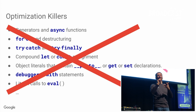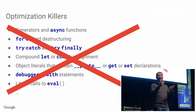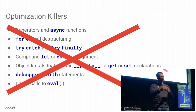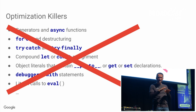You can use whatever you want — whatever makes sense for your program, use it. If there is something that is slow in V8 or in ChakraCore or whatever, file a bug and we fix it.